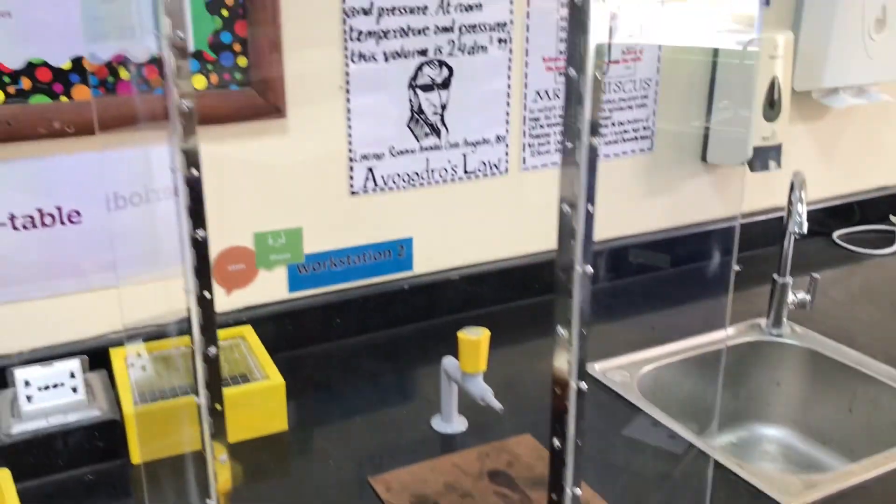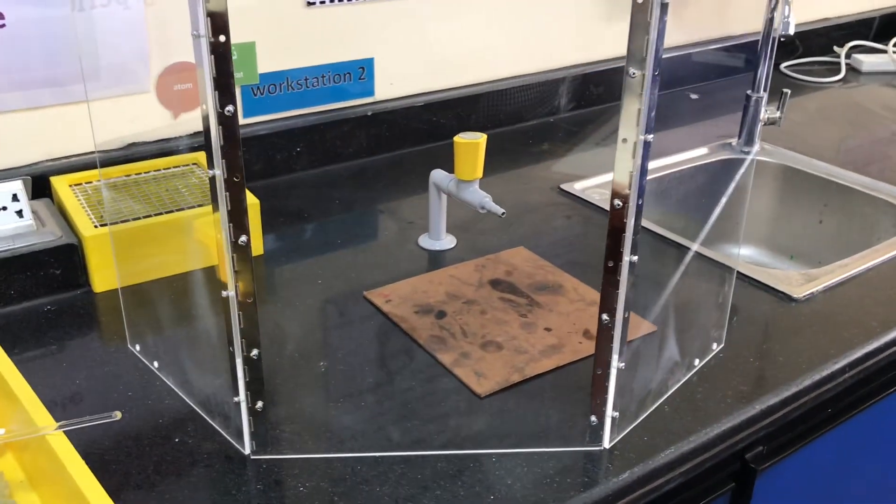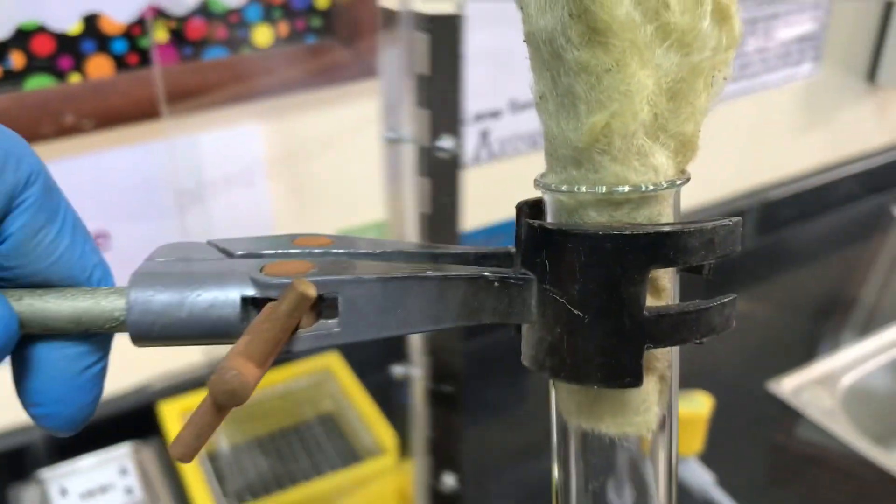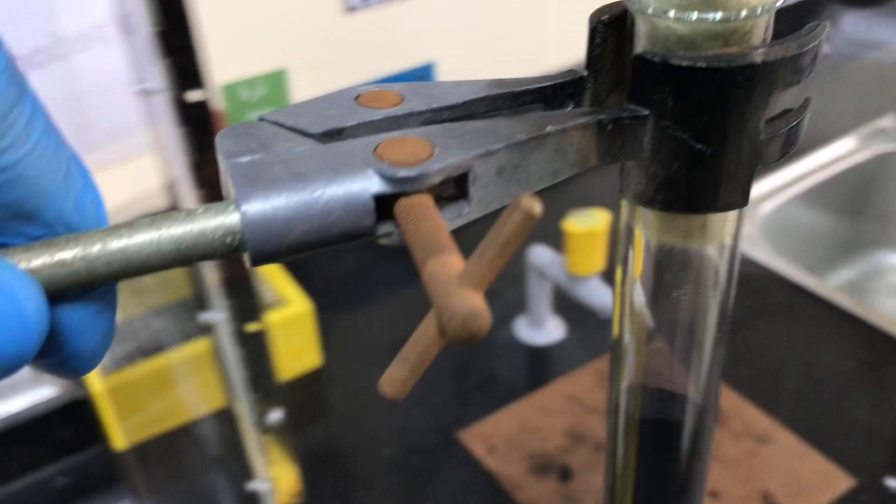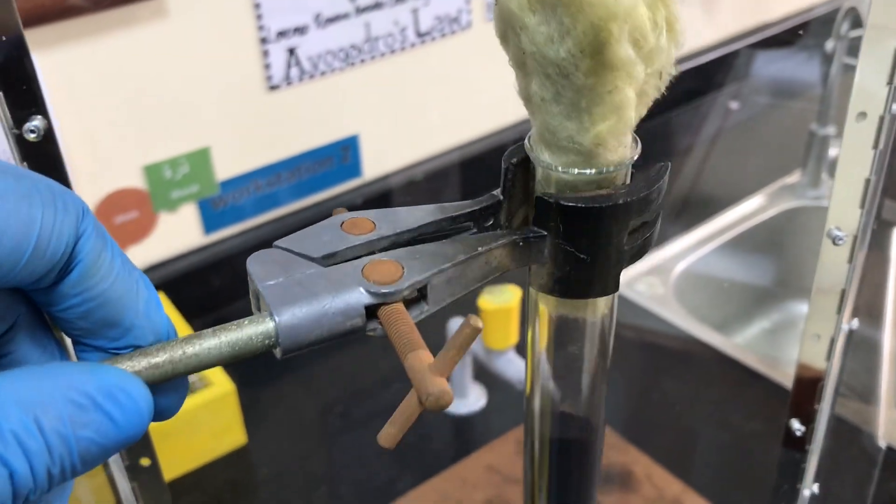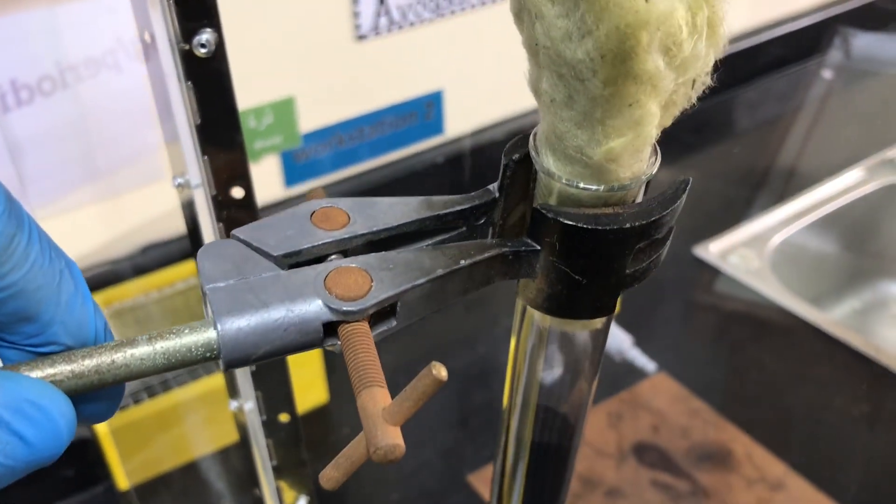So here we are with the safety screen. Beautiful brand new safety screen that we've got this year and we're ready to set everything up. So have your audience on this side. So here we go and here's another adaptation that you can do. Instead of using a pair of test tube holders which will work with the boiling tube sometimes I find that you don't actually get that much of a grip particularly if you want to try and shake it around.